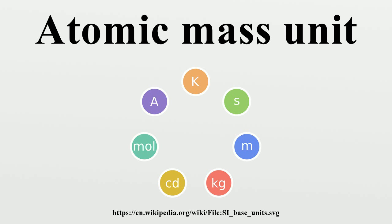The chemistry AMU, based on the relative atomic mass of natural oxygen, was about 1.000282 times as massive as the physics AMU, based on pure isotopic ¹⁶O. For these and other reasons, the reference standard for both physics and chemistry was changed to carbon-12 in 1961.